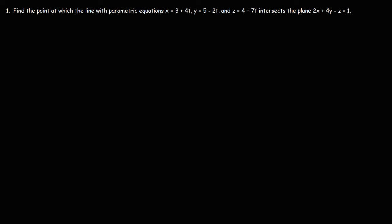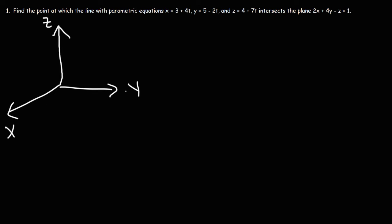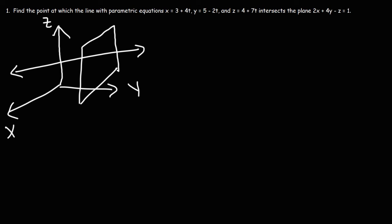In this video, we're going to talk about how to determine the point of intersection between a line and a plane. Let's draw a picture. Let's say that's the z-axis, that's the x, and here we have the y-axis. Let's say we have a plane, and we have a line that intersects the plane at point P.